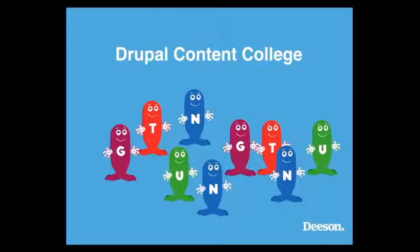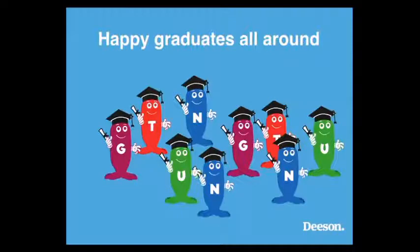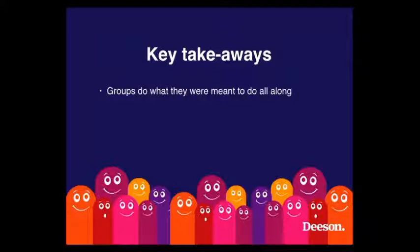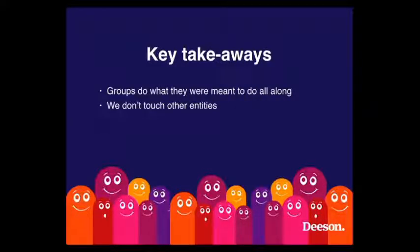Group allows them to go to college and actually major as a group. So from the get-go, they learn what it's like to be a group, what they should be doing, and that actually makes them happy again. When graduation day comes, there are happy graduates all around, and if there are websites recruiting Flerbs to become a group, they can actually recruit those Flerbs with a G on their shirt. The takeaways: groups do what they were meant to do all along — they study to become a group, so they get to do that. We don't touch other entities, and Flerbs should be happy.